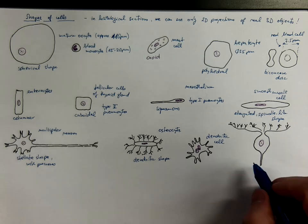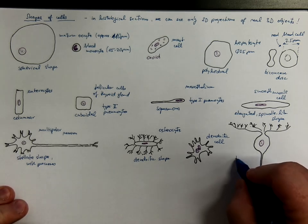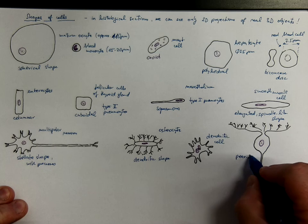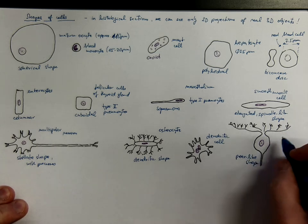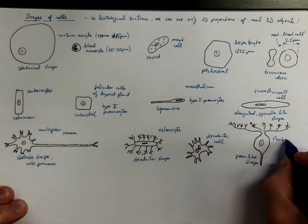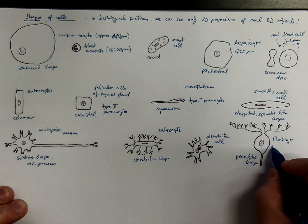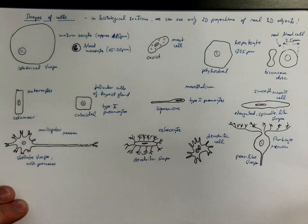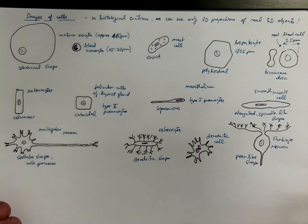We call it pear, pear-like shape. And this example is a Purkinje neuron that could be found in the second layer of the cortex of cerebellum.